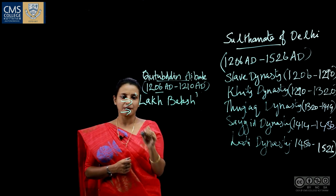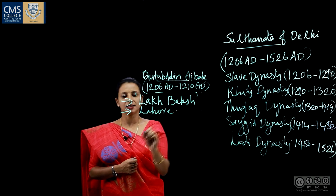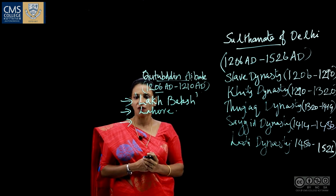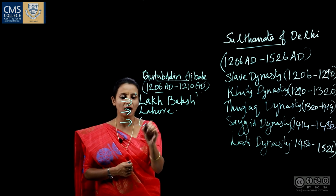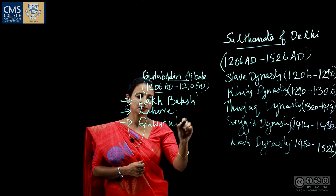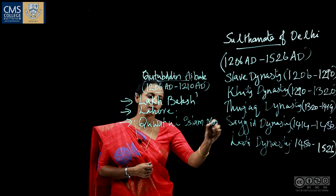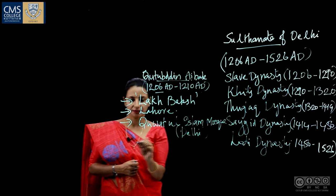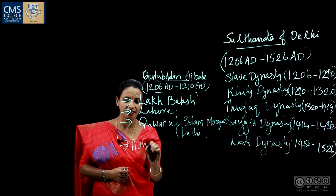He established his capital at Lahore and started the first two Muslim mosques in India — the Quwwat-ul-Islam Mosque at Delhi and the Adhai Din Ka Jhonpra Mosque at Ajmer.